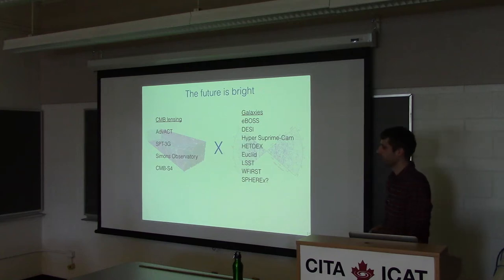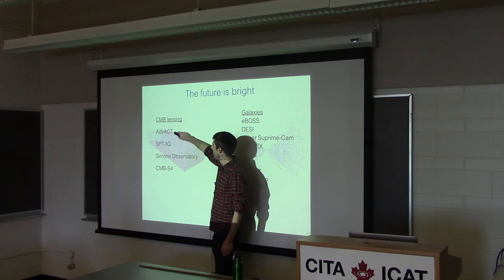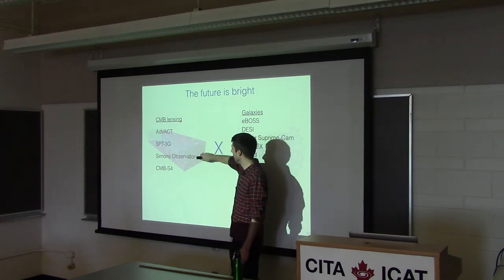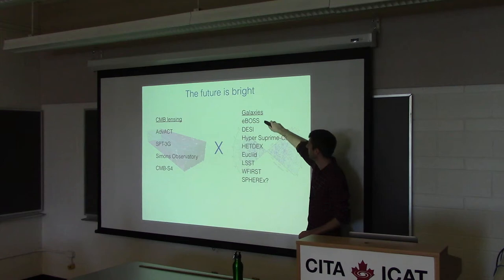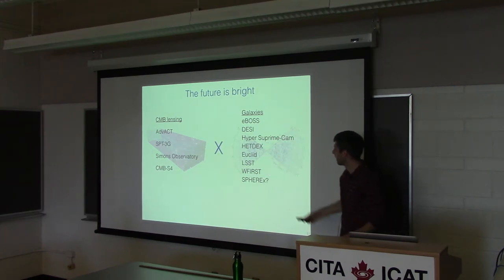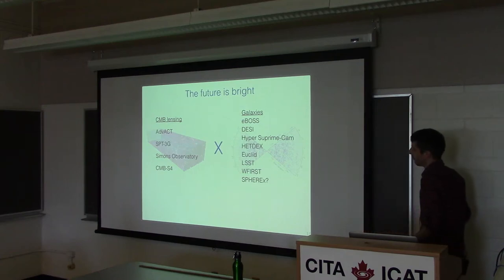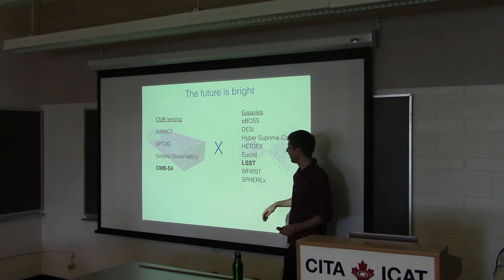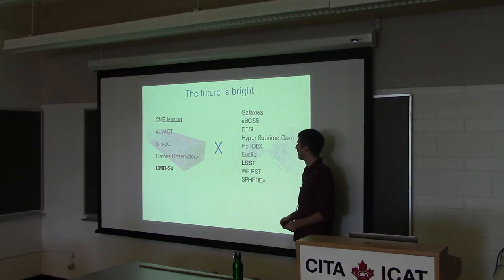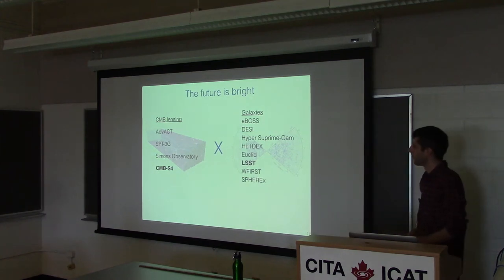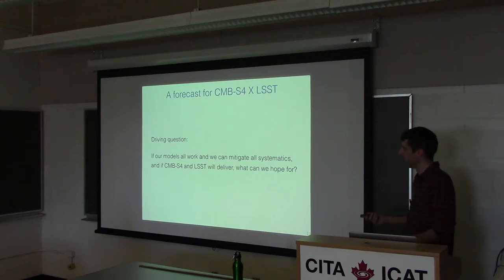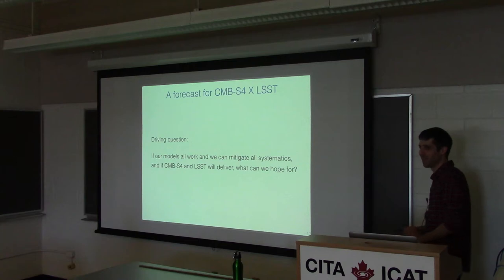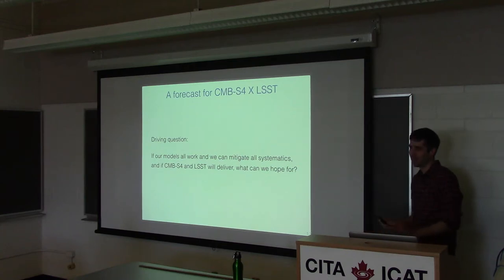What cross-correlations can we do in the future? On the CMB side: Advanced ACT and SPT are already taking data, Simons Observatory is coming very soon, and hopefully CMB-S4 in the future. On the galaxy side there are many surveys — DESI, Euclid, and LSST in the next couple of years. The specific combination I'll focus on is what can we learn if we have CMB-S4 CMB lensing measurements cross-correlated with galaxies from LSST. The driving question is: assuming all our models are correct and systematics mitigated, how well can we hope to do?